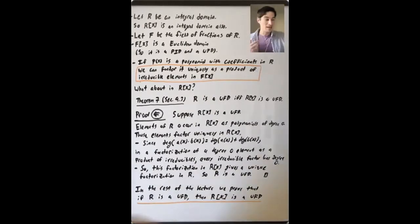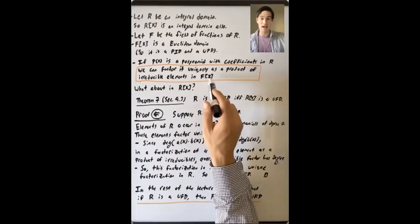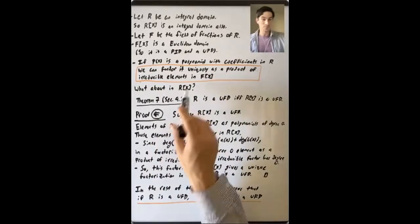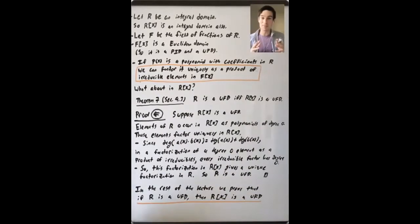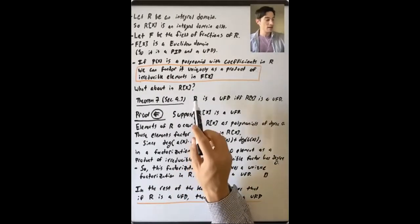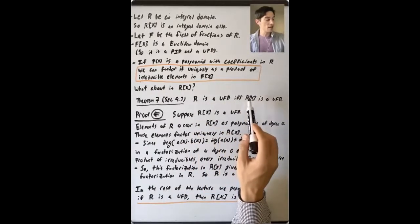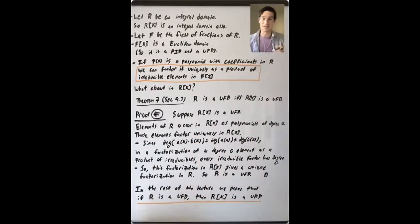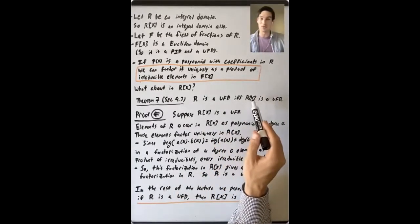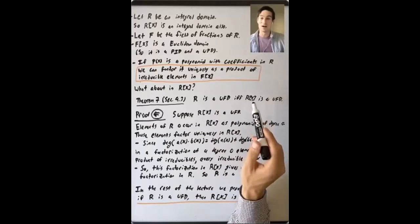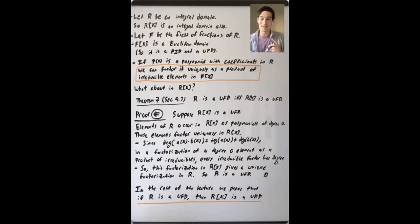We want to understand factoring P(x) as a product of other polynomials not in the bigger ring F[x], but in R[x]. The main theorem we want to prove in this lecture is that R is a UFD if and only if R[x] is a UFD. So if R has nice factorization properties, then so does the polynomial ring R[x]. One direction is pretty straightforward, and the other direction will be the subject of most of this lecture. We'll do the easy direction first.